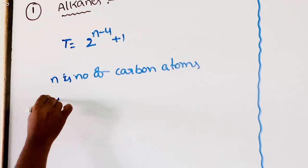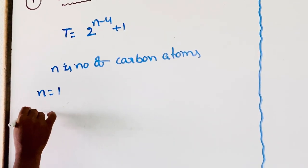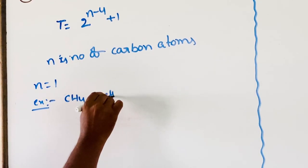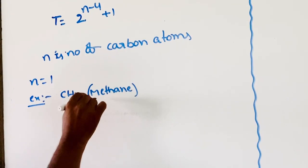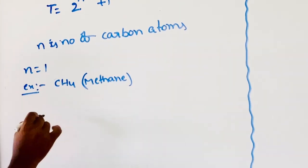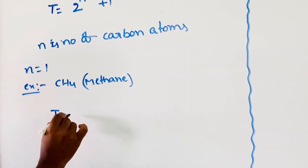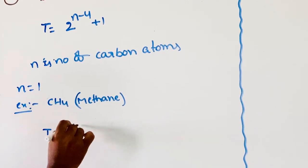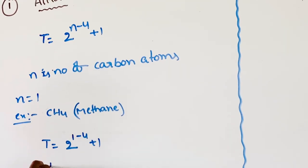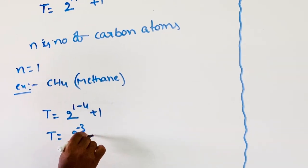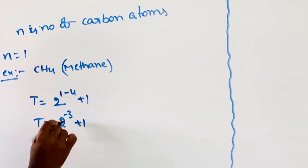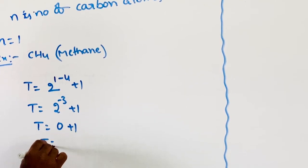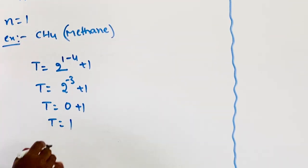When n = 1, that is methane, the total number of isomers T = 2^(1-4) + 1 = 2^(-3) + 1. Since 2^(-3) is a negative value, it is treated as 0, so T = 0 + 1 = 1. Total number of isomers is 1, that is CH4.